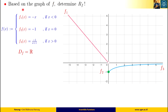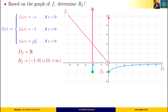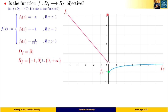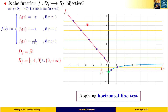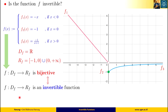Based on the graph of f, we determine the range of function f, represented on the y-axis. From the graph, the range of f consists of all y values between minus 1 and 0 (including minus 1), and also all y values greater than 0. The next question is whether function f is one-to-one. If we draw infinite horizontal lines across the graph, no horizontal line intersects the graph more than once. Thus, f is injective, and therefore the function f is invertible.